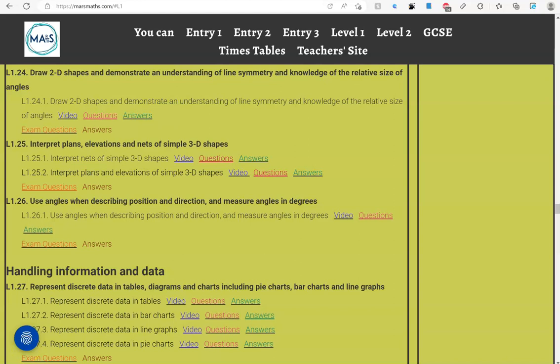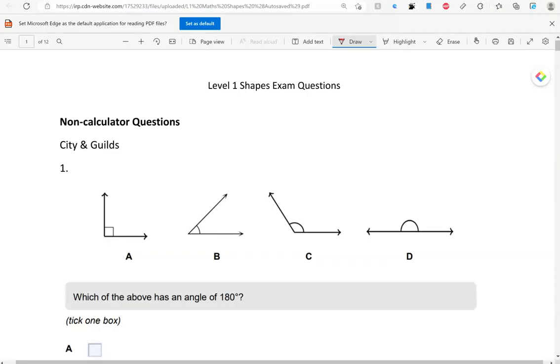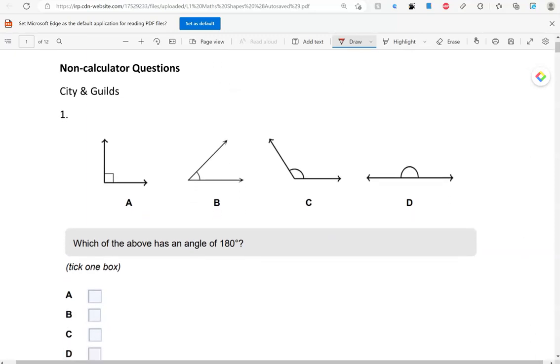In this video, we'll go through exam questions that cover the criteria: draw 2D shapes and demonstrate an understanding of line symmetry and knowledge of the relative size of angles. You can locate the questions on the massmass.com website under level 1. The questions come from different exam boards. We'll start with the non-calculator questions, and then we'll move to the calculator questions.